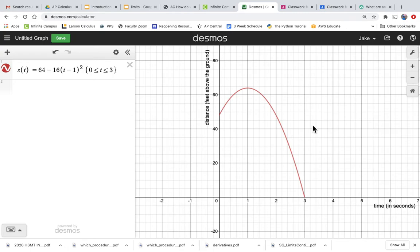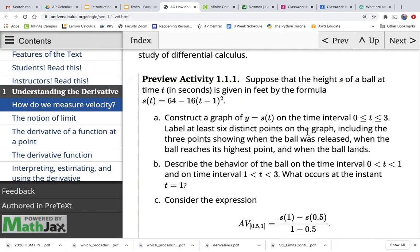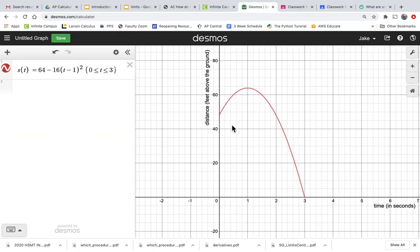And basically it asks us to plot six points. If we go back to active calculus, it says label at least six distinct points on the graph, including the three points showing when the ball was released, when the ball reaches its highest point, and when the ball lands. So let's do those three. When the ball was released, the scenario starts at time zero. So I can just plot a point by putting the point zero. And then instead of computing the y, I can just have Desmos do that. So I can say s of zero, meaning what is the value when we plug zero into this function named s.